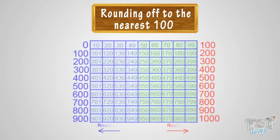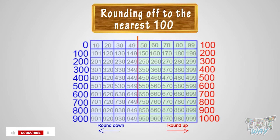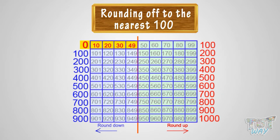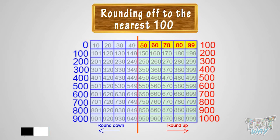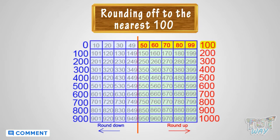See the figure. All the numbers between 0 to 49 are rounded down to 0, and 50 to 99 are rounded up to 100.